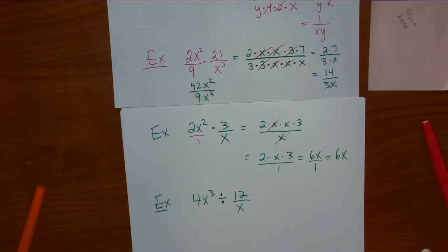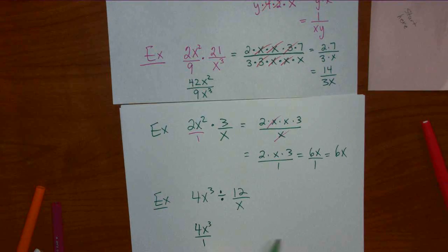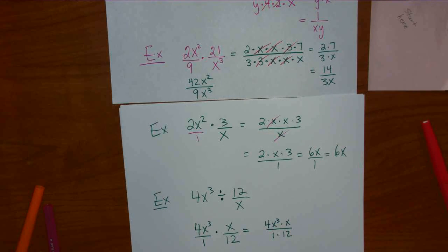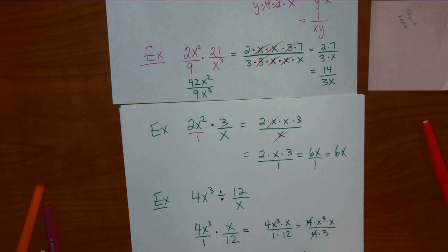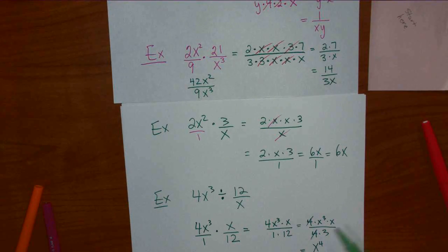Division with variables: 4x cubed divided by 12 over x. That's 4x cubed over 1 — you don't change the first fraction. Multiply by the reciprocal of the second: times x over 12. No x's cancel here. Can the 4 cancel with something on the bottom? Yes — 12 is 4 times 3, so the 4s cancel. How many x's do we have on top? 4 of them — that's x to the 4th power, not 4 times x. Over 3. That would be your answer: x to the 4th over 3.